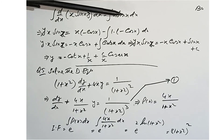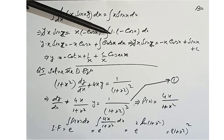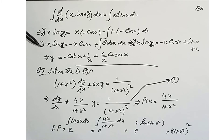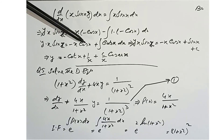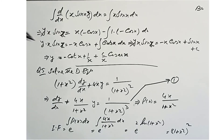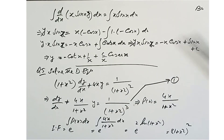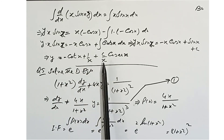Using integration by parts with first function x and second function sin x: integral of x·sin x dx = -x·cos x + integral of cos x dx = -x·cos x + sin x + c. So x·sin x · y = -x·cos x + sin x + c. Dividing through by x·sin x, the required solution is y = -cot x + 1/x + c/(x·sin x).